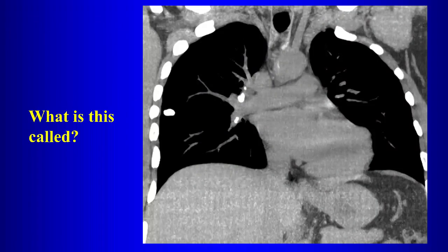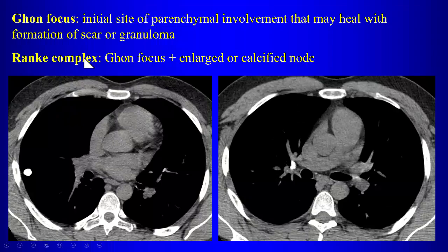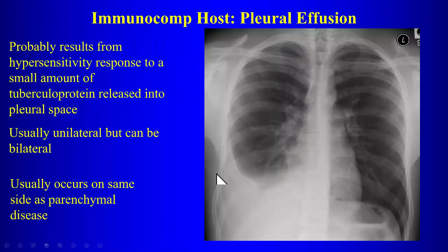This is a Ranke complex. The Ghon focus is the focus of infection in the lung — it can be a calcified granuloma. The Ranke complex combines that with abnormality within the lymph node, most commonly calcification. The Ghon focus is the site of initial infection in the lung; together with an abnormal lymph node — enlarged or calcified — it forms the Ranke complex.